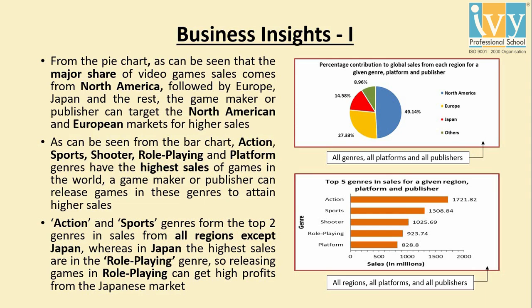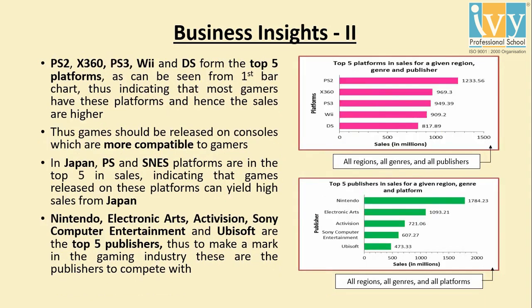The insights we can draw from the sales summary dashboard are: the game maker or publisher can target North American or European markets for higher sales. Releasing games in the top five genres can also lead to higher sales. The top five platforms in sales indicate that most video gamers possess these platforms, so games must be released on platforms more compatible to gamers. The top five publishers denote that to make a mark in the gaming industry, these are the publishers to compete with.